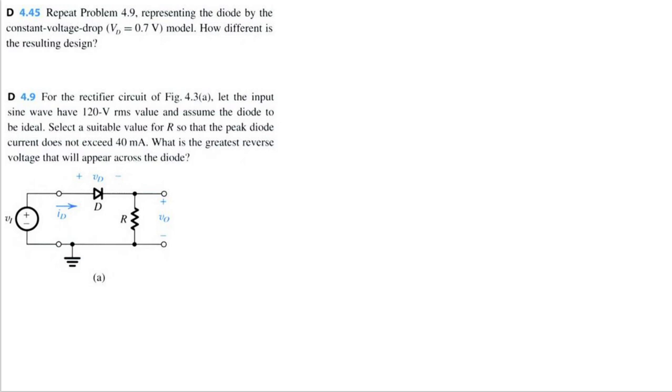Let's solve problem 4.45 for microelectronics circuits eighth edition by Sedra and Smith. We're going to solve 4.9 but we're going to use the constant voltage drop diode model this time, with V_D equals 0.7 volts. Then we're going to compare our results from the original question using the ideal diode model.